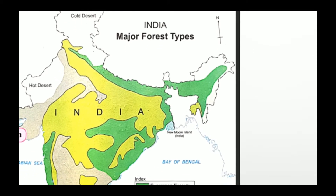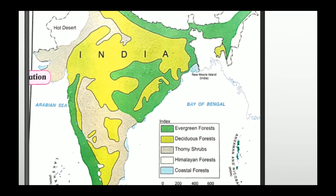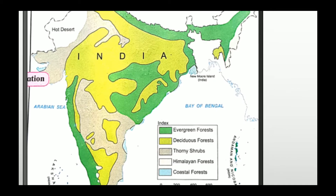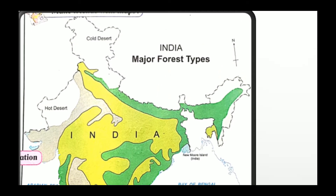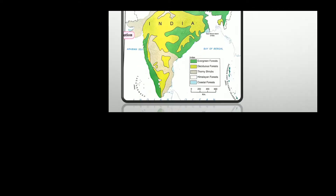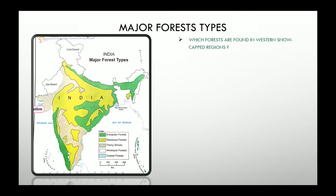Also Tamil Nadu. Himalayan forest — the one in white color — you can see on the northern part of India and also in the northeastern part of India. The last one is the coastal forest, which we can see in blue color, which is basically found in the eastern part of India. By this time you have understood the types of forests.